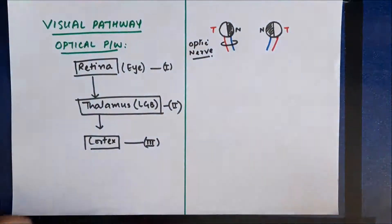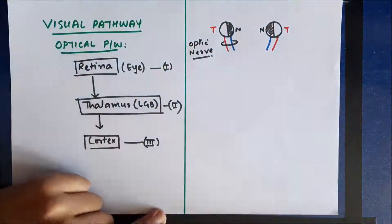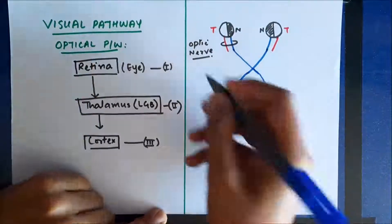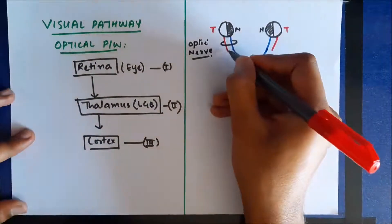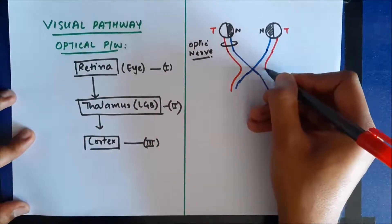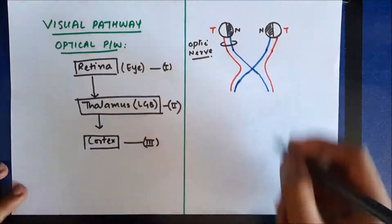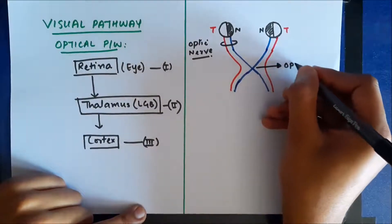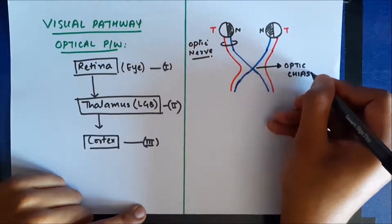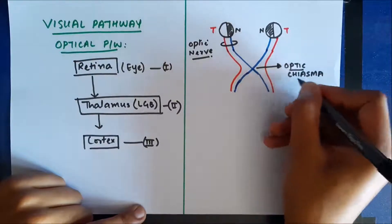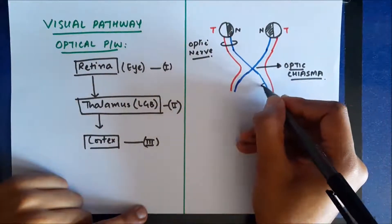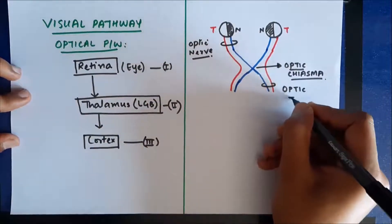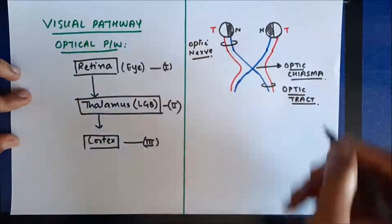The fibers from the nasal side cross to the opposite side, whereas the fibers from the temporal side remain on the same side. The point where the crossing of these fibers occurs is known as the optic chiasma. The lateral fibers from the same side and the middle fibers from the opposite side together form the optic tract.